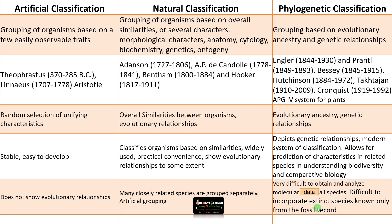It is difficult to incorporate extinct species known only from the fossil record. DNA must be isolated and sequenced, and only a sophisticated laboratory can handle phylogenetic classification. So the most common and widely used system is the natural classification system, whereas the most modern classification that truly reflects evolutionary relationship is the phylogenetic classification system.